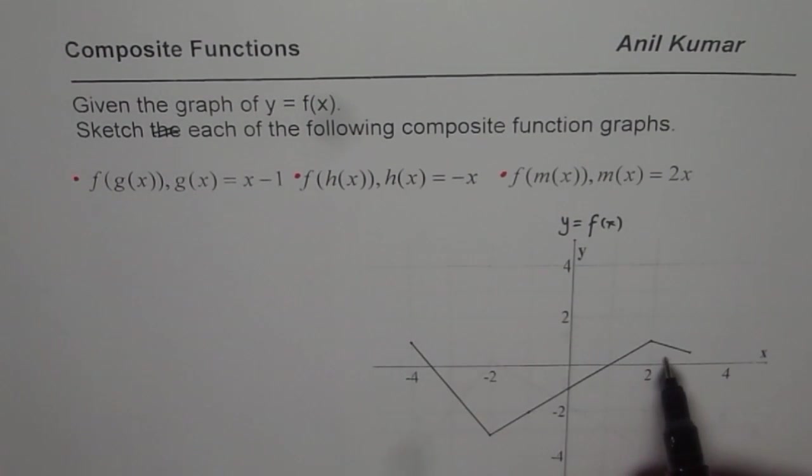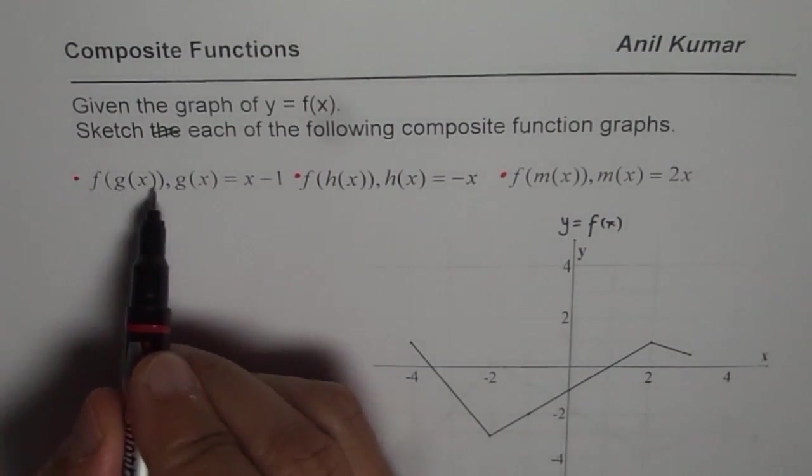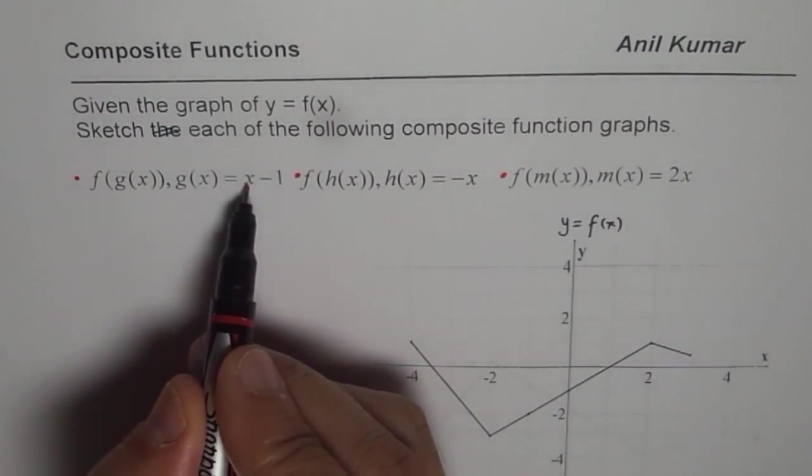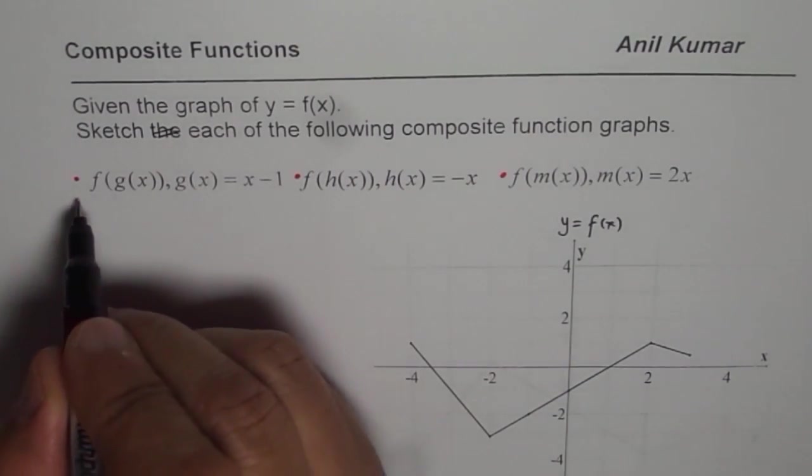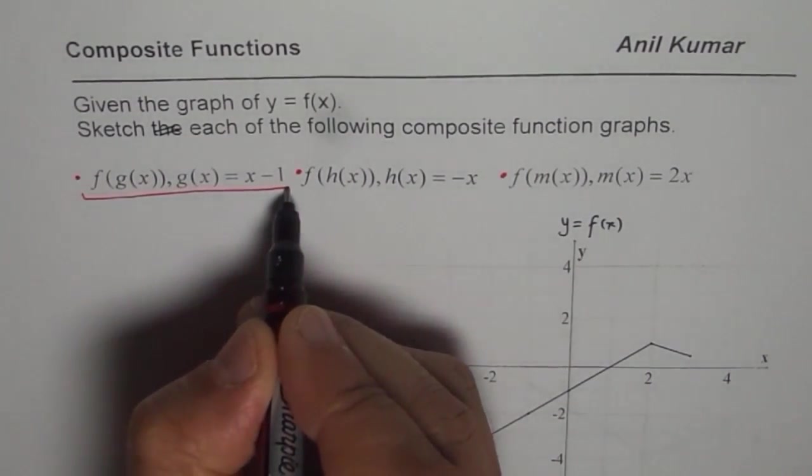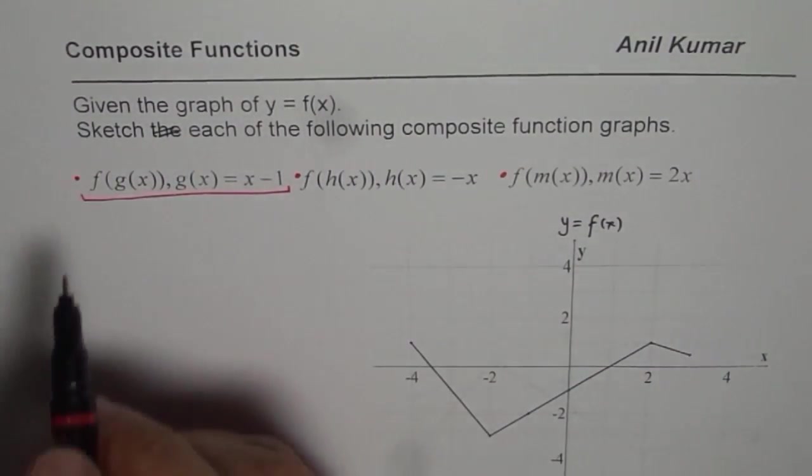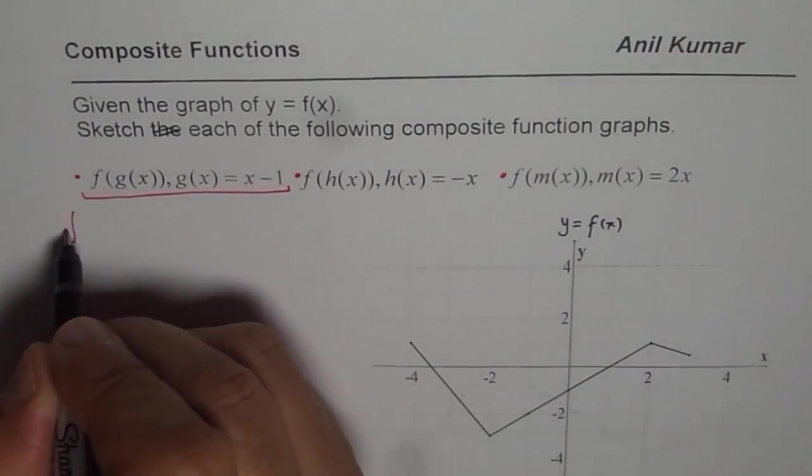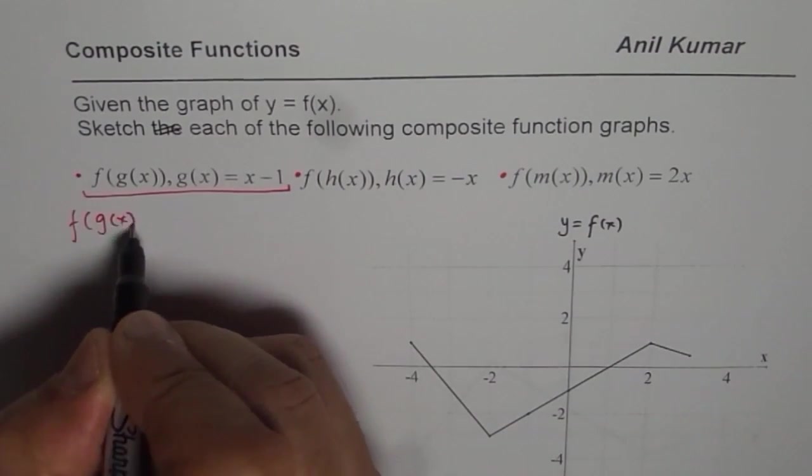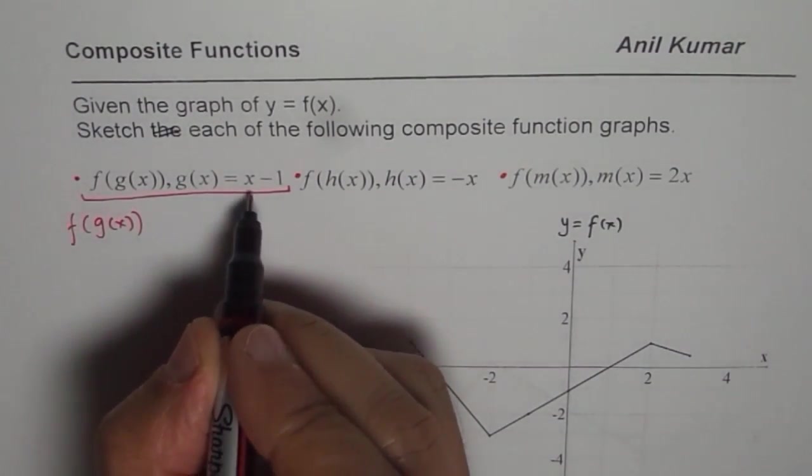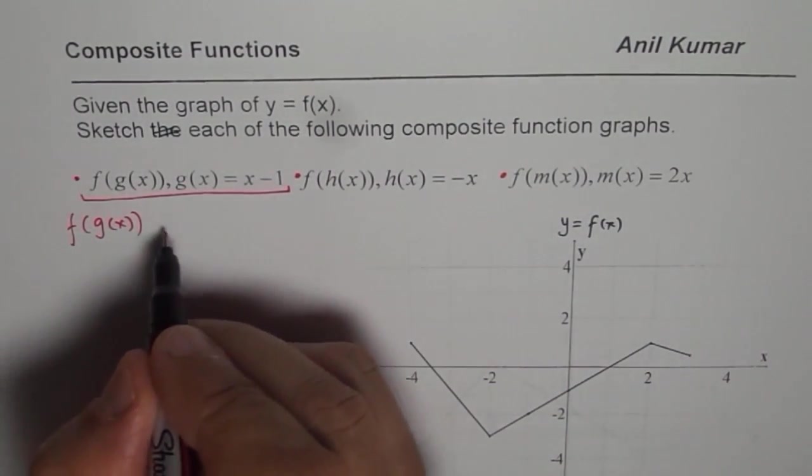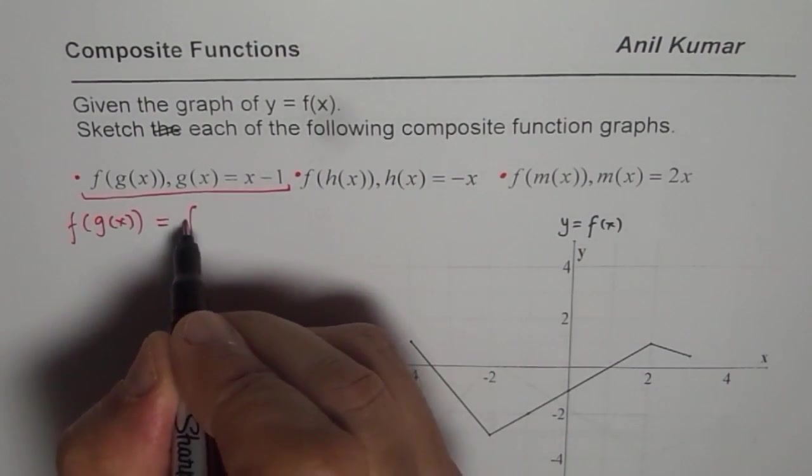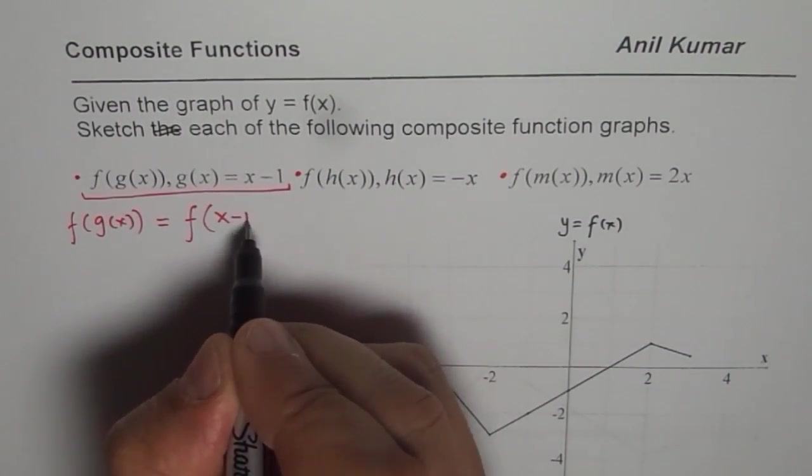We are given one particular graph, this is f of x and we need to find f of g of x where g of x is x minus 1. Let me do the first one for you so that we understand. So this is f of x and we want to make f of g of x. g of x is given to us as x minus 1, so I could write this as f of x minus 1.